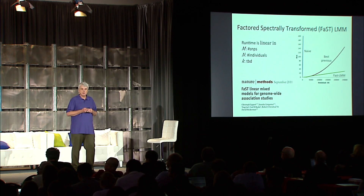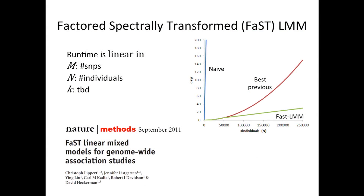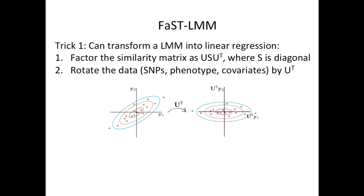Several years ago we identified a set of algebraic manipulations that greatly speed up this linear mixed model. We call it FAST-LMM. Instead of scaling cubically in the number of individuals, it scales linearly in the number of individuals — a dramatic speedup. There's another factor K here, which I'll describe in a moment.